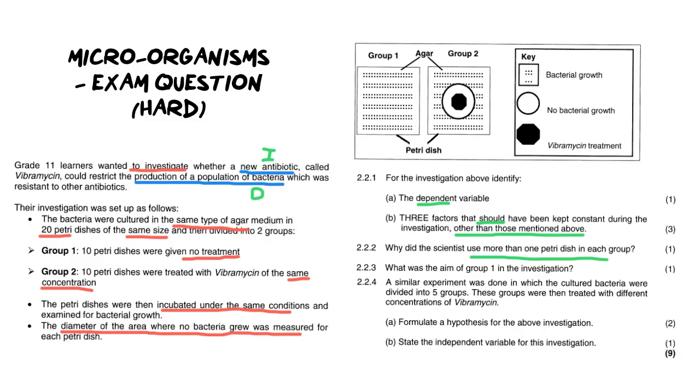Looking on to the third question, what was the aim of group one in this investigation? In other words this group that we see here, what was the purpose of them? Well it's for one mark so we don't need to go into too much detail. It's the control group. It's the group that we are going to use to compare because they received no antibiotic.